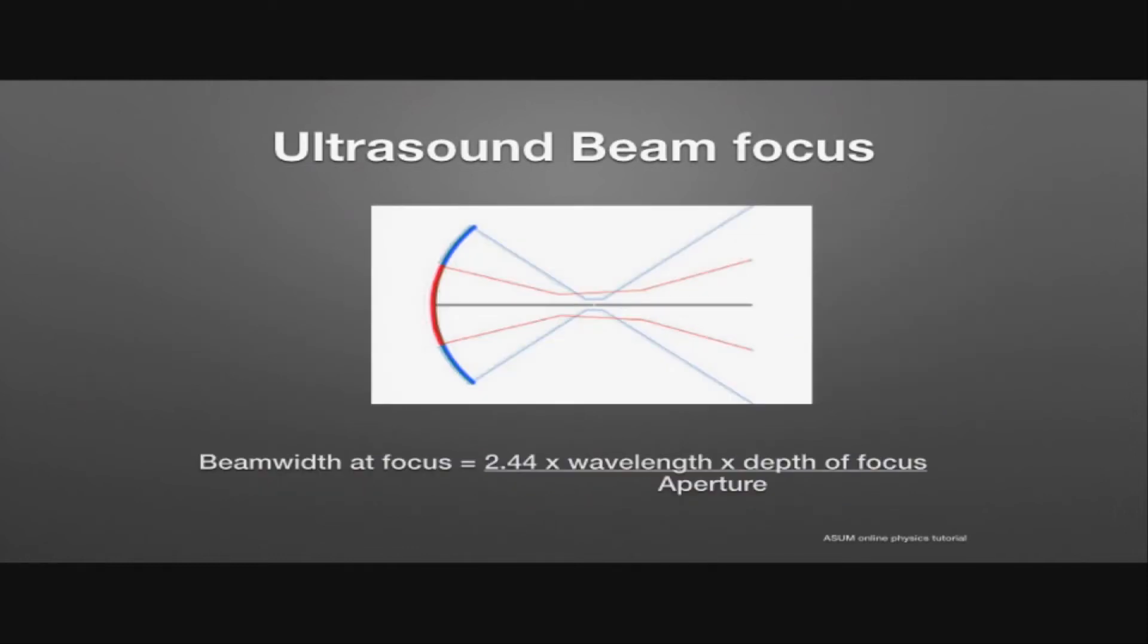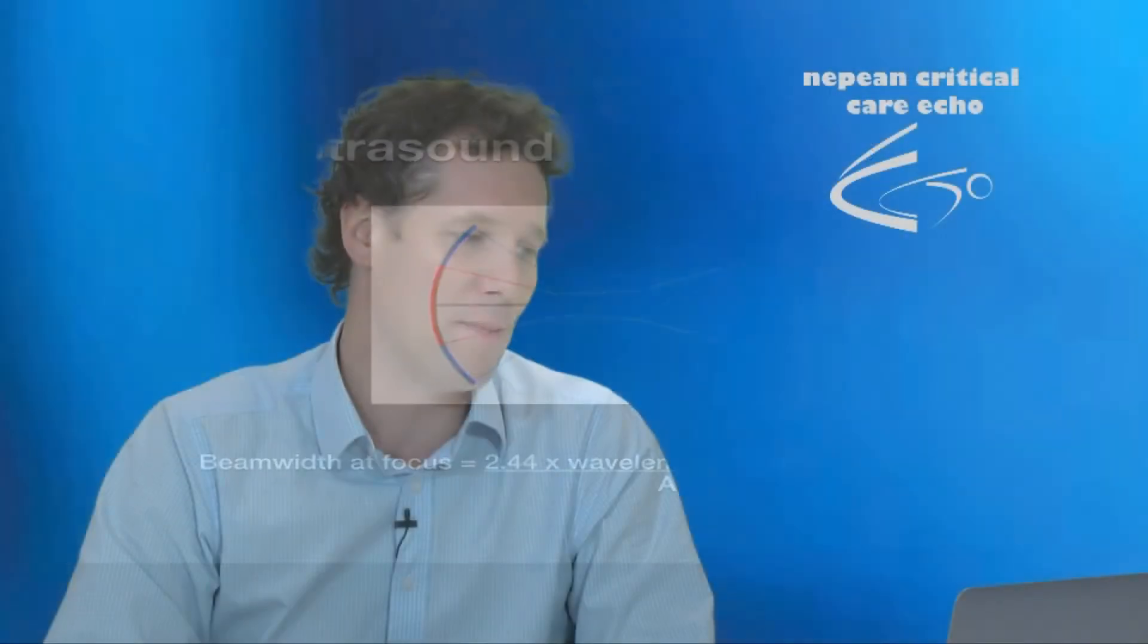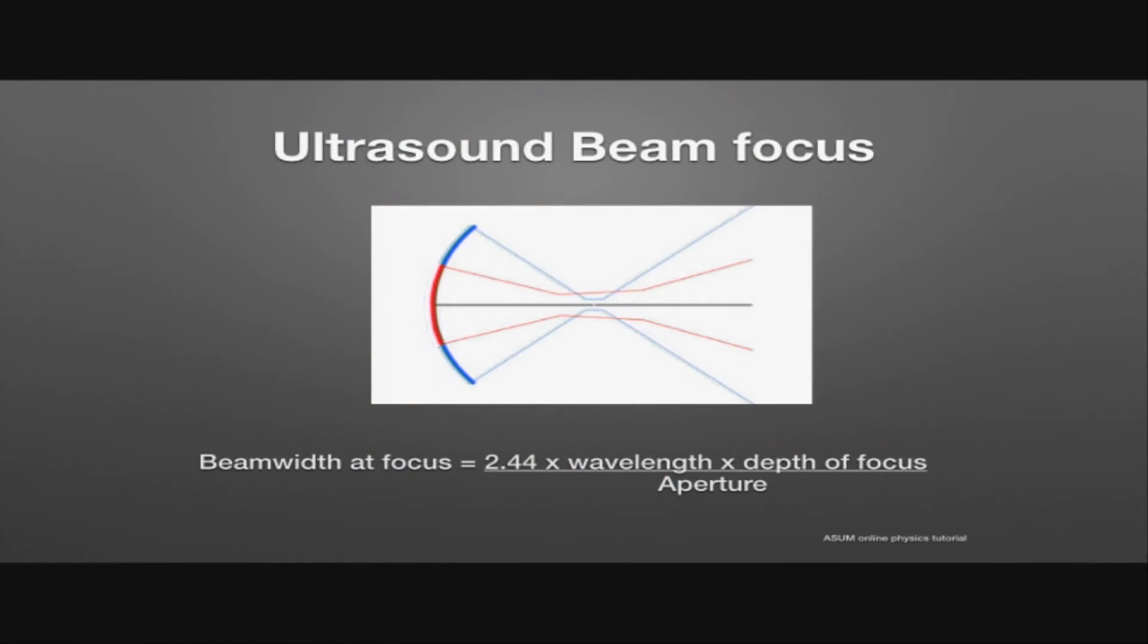Another important equation to remember is the beam width at the focus, which is equal to 2.44 times the wavelength, times the depth of focus, divided by the aperture. And again, it's probably important just to remember that the beam width at the focus is proportional both to the wavelength, the depth of the focus, and it's inversely proportional to the aperture. Another way of potentially thinking about that is the narrowest beam is achieved by the highest possible frequency.